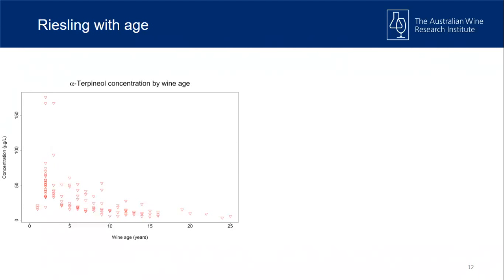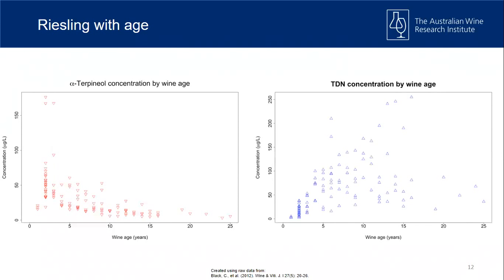A while ago we did a survey of 116 commercial Rieslings and analyzed for quite a number of things. This graph shows alpha-terpineol, one of the monoterpenes that appears after a few rearrangements — not in fresh wine but after a little while. It's noted as floral and fruity but can also be resinous and woody. It simply degrades over time — that's why young wines are driven by monoterpenes, and TDN is the opposite: age is the biggest contributor to TDN concentration.